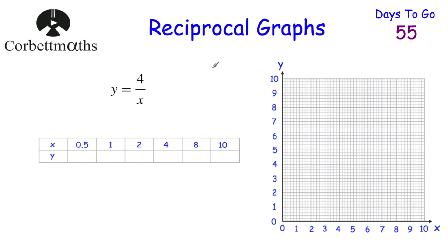Today we're going to be looking at other types of graphs. We've looked at linear graphs and we've looked at quadratic graphs. Today we're going to be looking at reciprocal graphs and cubic graphs. Here we've got the graph of y equals 4 over x, and that's called a reciprocal graph.